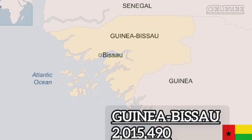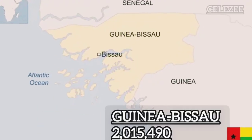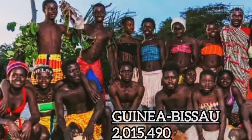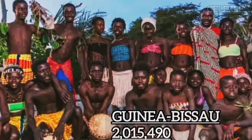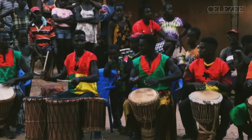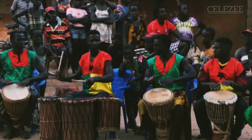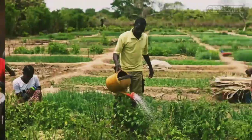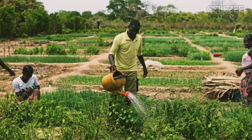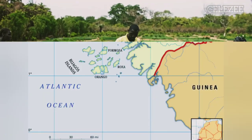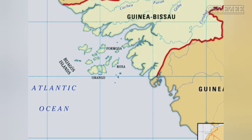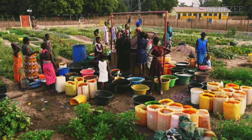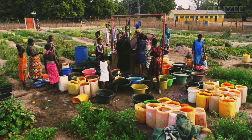Number 9: Guinea-Bissau. Guinea-Bissau, a small country in West Africa, has a population of 2,015,490. It relies heavily on tourism and agriculture as key contributors to its economy. It is the second least populated country in West Africa and the least populated on the West African mainland.